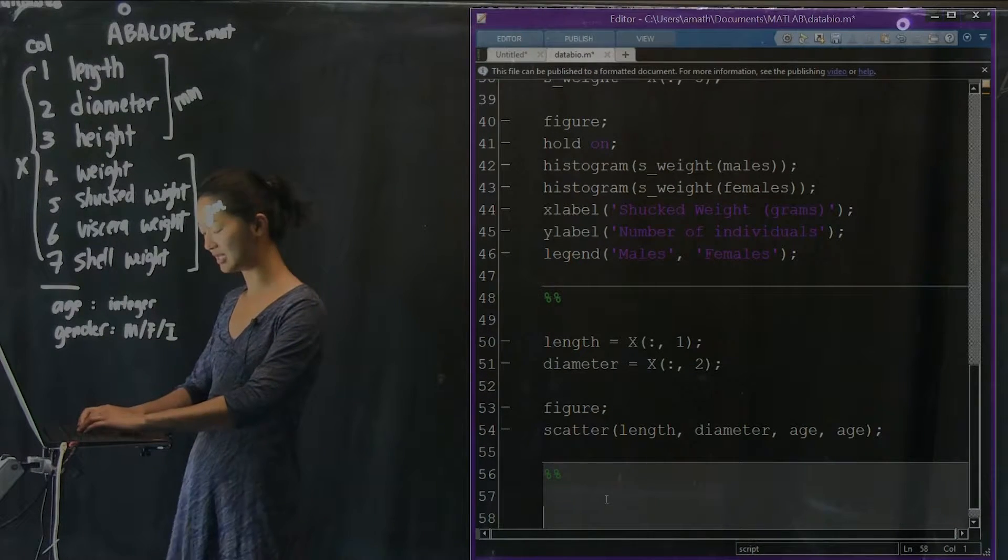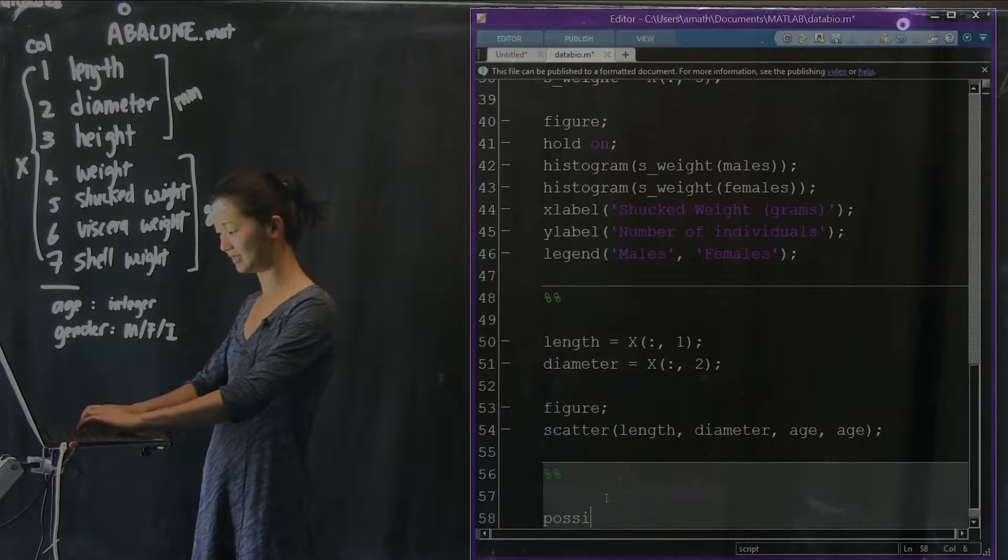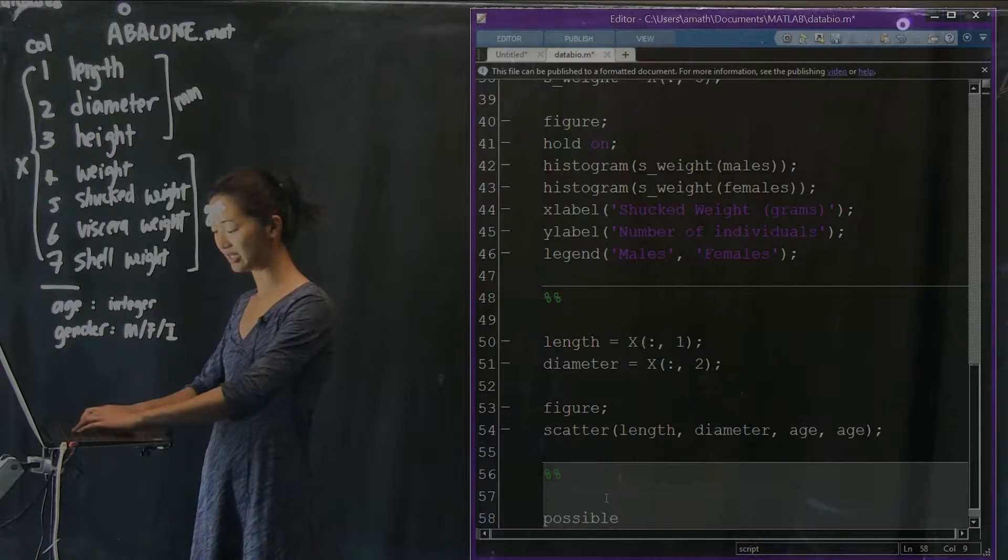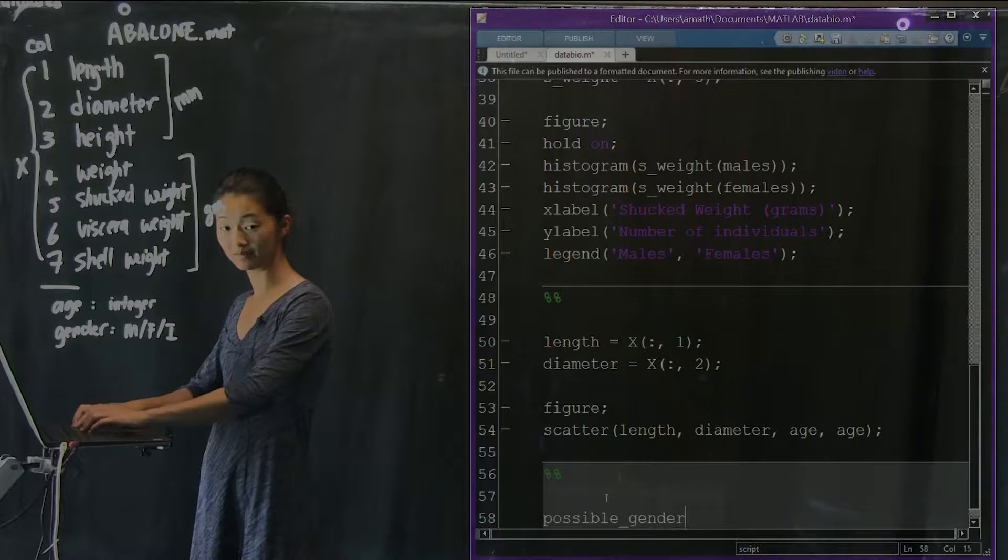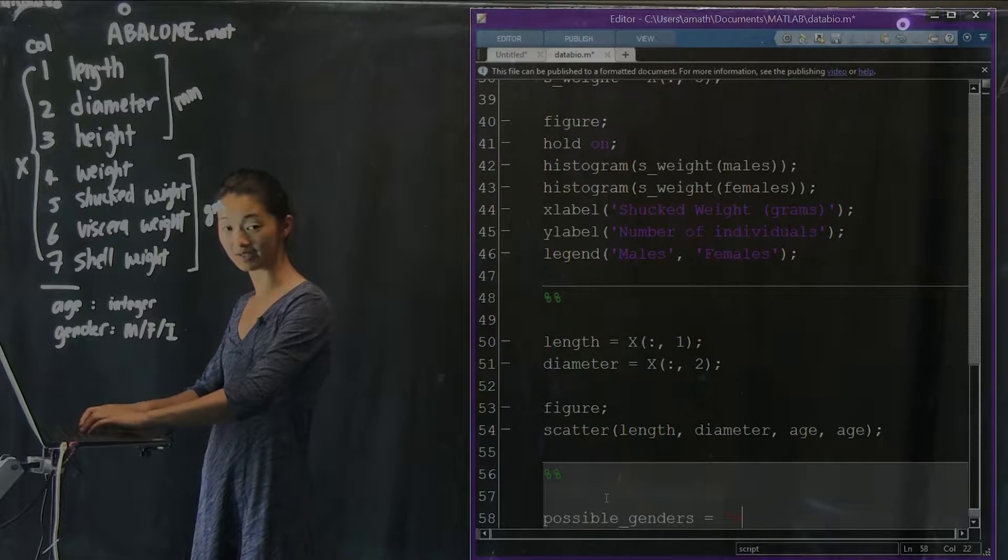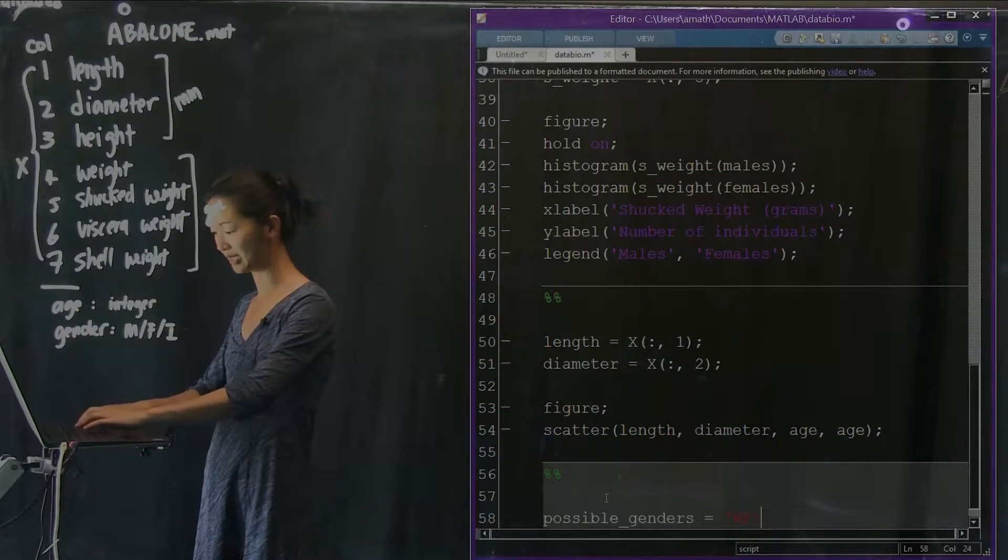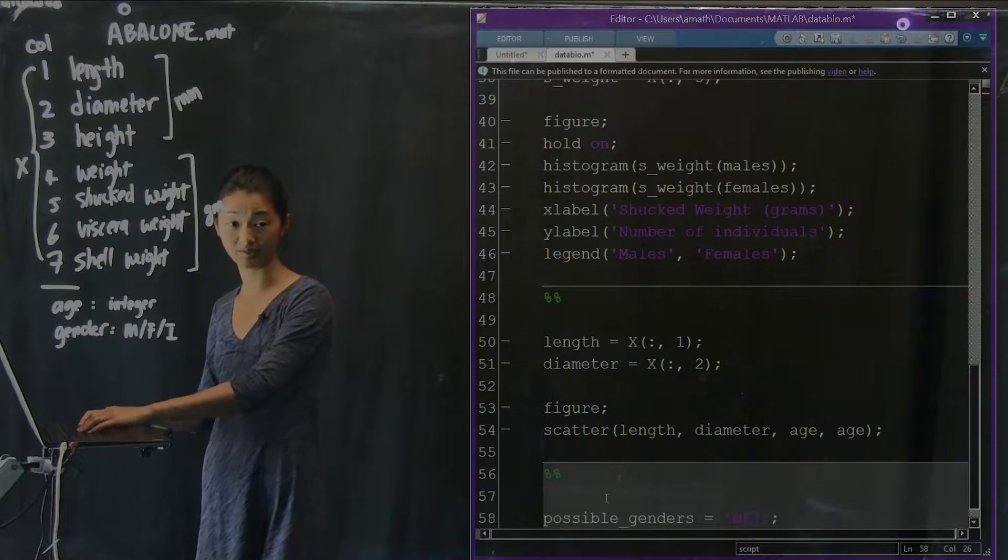What we're going to do is I'm going to enumerate a list of possible genders as it's either an M or an F or an I. Here's all the ones you could possibly be.